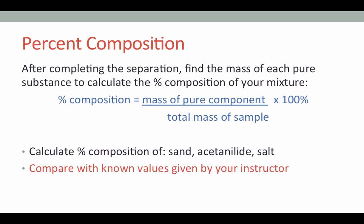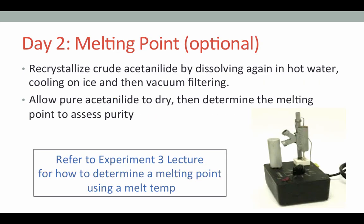Once you've done this, see your lab instructor for the true values of the percent composition and compare what you've calculated to these known values. You will determine your accuracy by percent error for the percent acetanilide in your mixture. If time permits, you may choose to further purify your acetanilide by recrystallizing again and then determining the melting point to assess how pure it is.